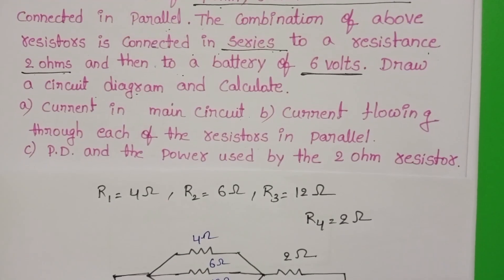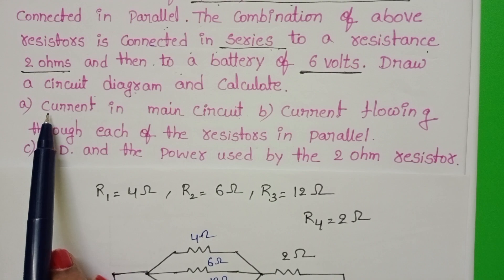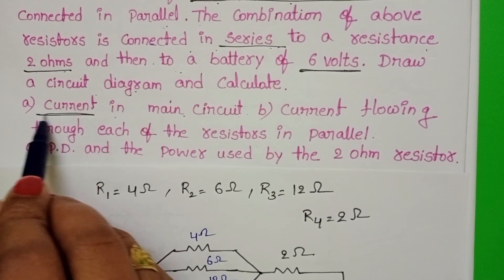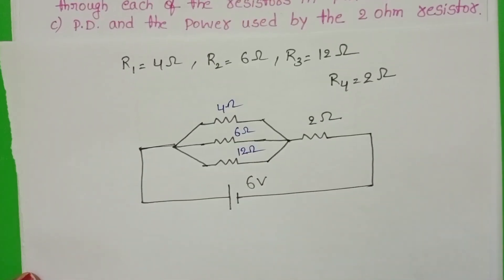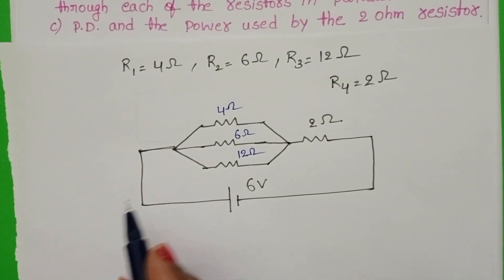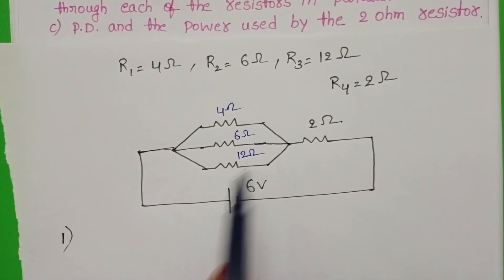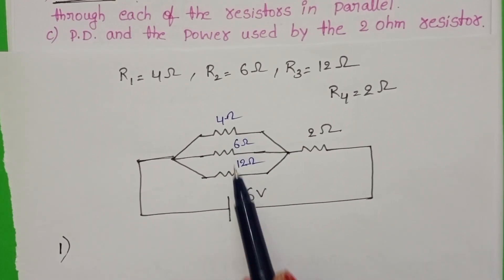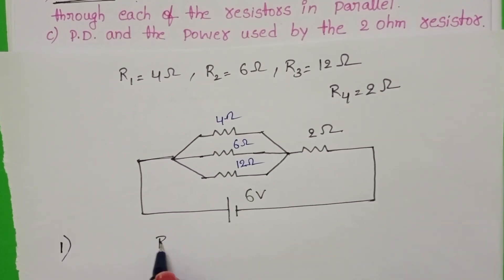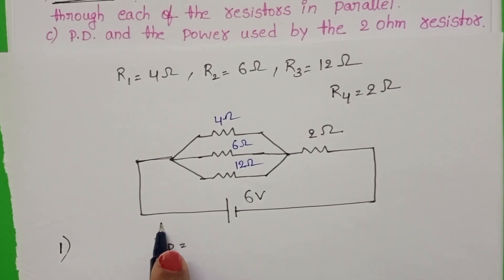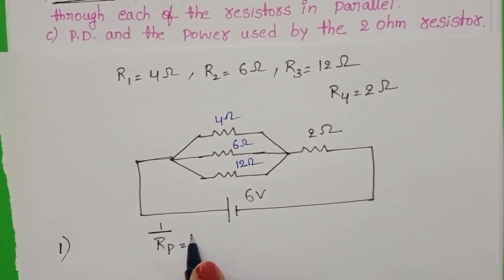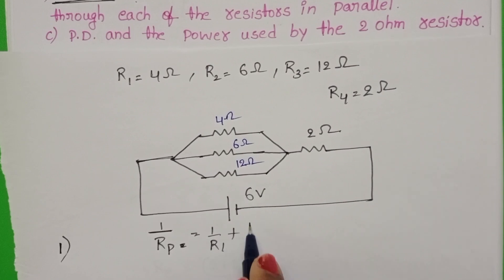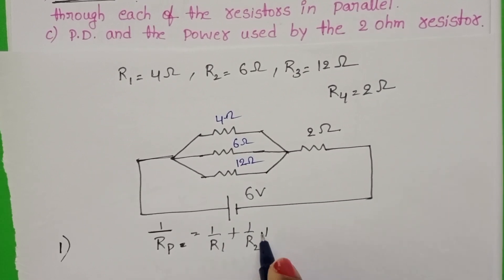The first question is to find the current in the main circuit. To do this, we first find the equivalent resistance of the given circuit. These 3 resistors are in parallel. The equivalent resistance of the parallel combination: take 1 by Rp equals 1 by R1 plus 1 by R2 plus 1 by R3.